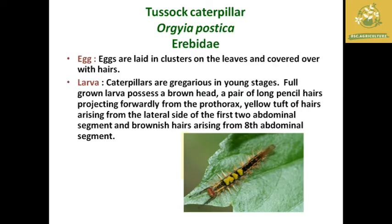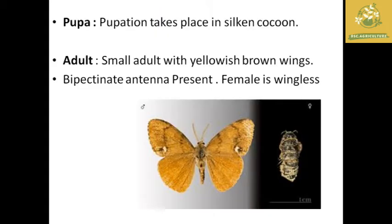Next is the tussock caterpillar, scientific name Argya Paustica, family Lymantriidae. There are large clusters in groups, and the larvae have hairs. The larvae have yellow-colored hairs and brownish hairs. There is a prothoracic region visible. The pupa is covered with silk under a cocoon.